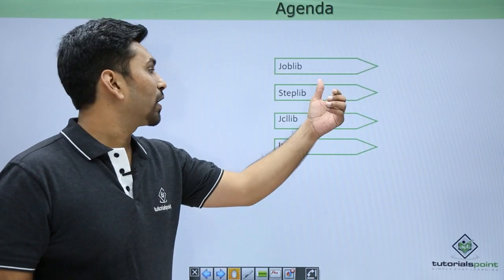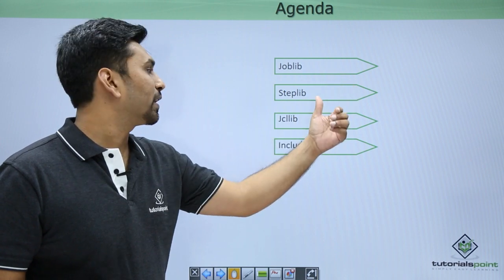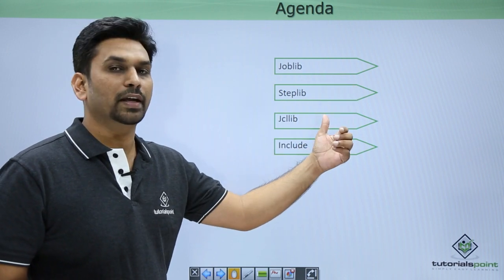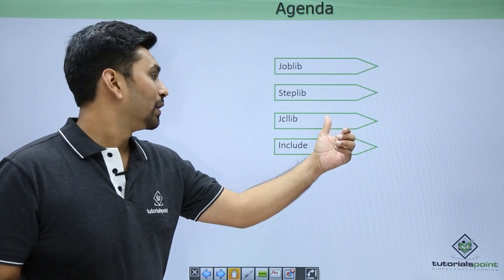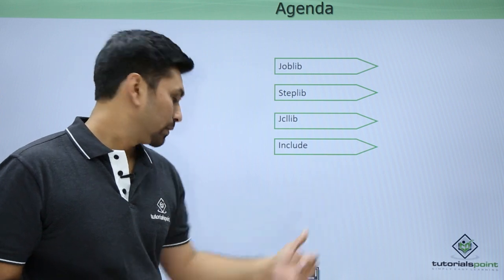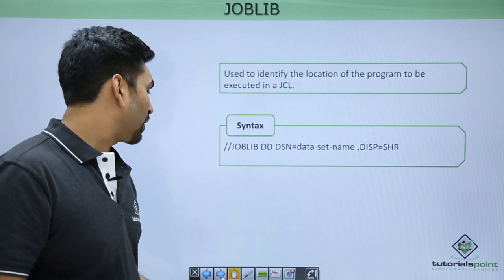We can have libraries at job level, then we can have at step level, then we can have at JCL level and then the include statement. So we will first start with job level.